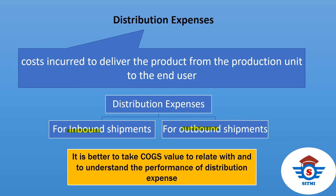It is better to take cost of goods sold value to relate with and to understand the performance of distribution expense out of total expense. It gives justification on cost variations if any, and it also provides shipment-wise or unit-wise cost in more detailed analysis. The calculation is: Distribution Expense divided by Cost of Goods Sold, giving you the percentage of distribution expense within cost of goods sold.